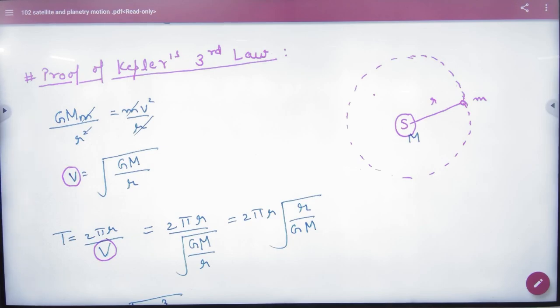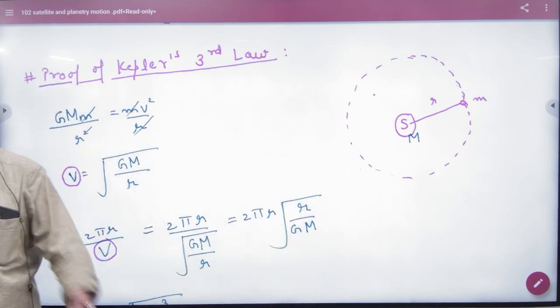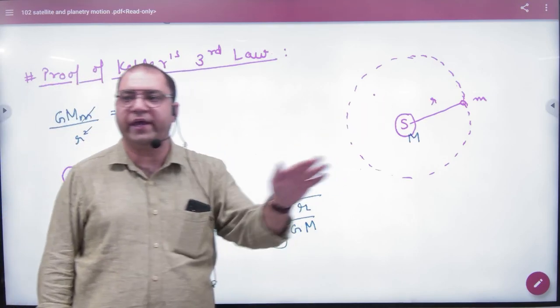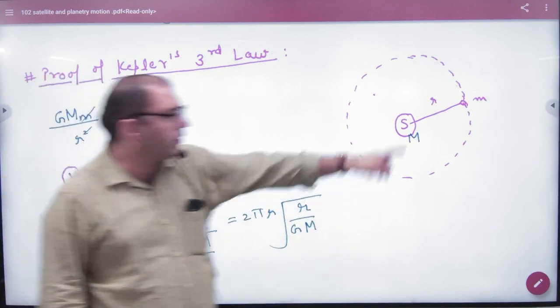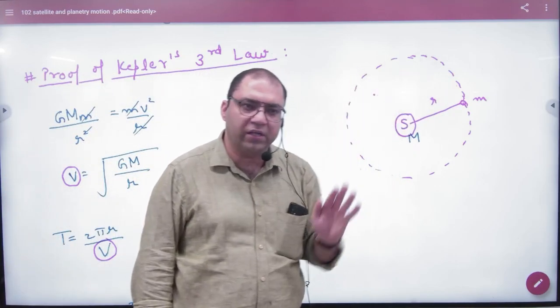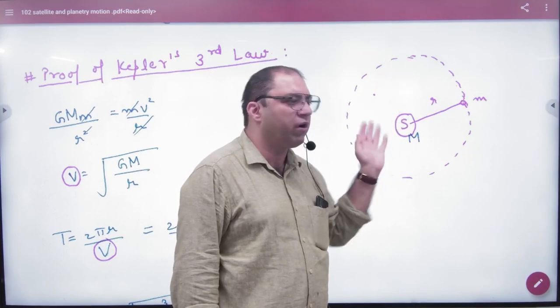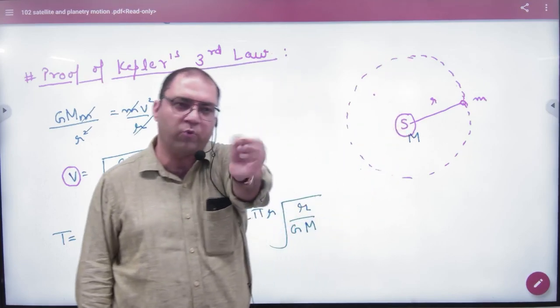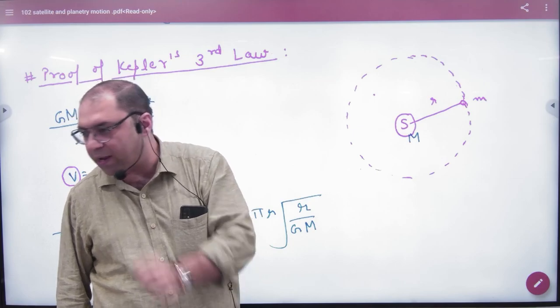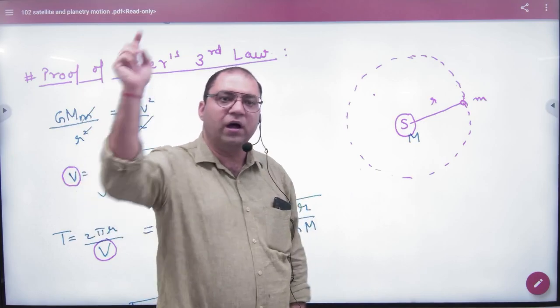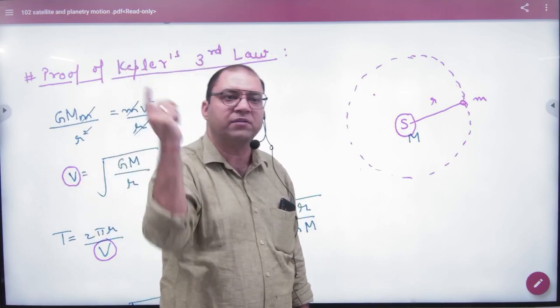So third law - consider the sun and earth. The distance between sun and earth is small r. Capital R has no significance here - from the sun's perspective, earth is just a point at distance small r. Earth is orbiting in a circle.